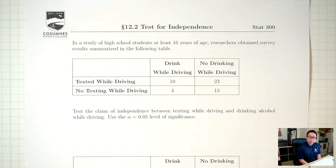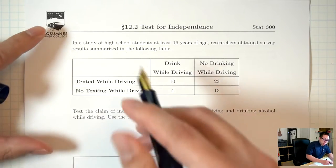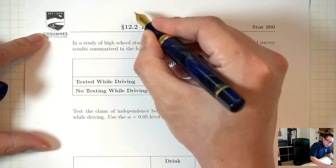Hello. In the last lecture we talked about the test for goodness of fit, and that was a chi-square test. Today we're going to talk about another type of chi-square test: the test for independence.